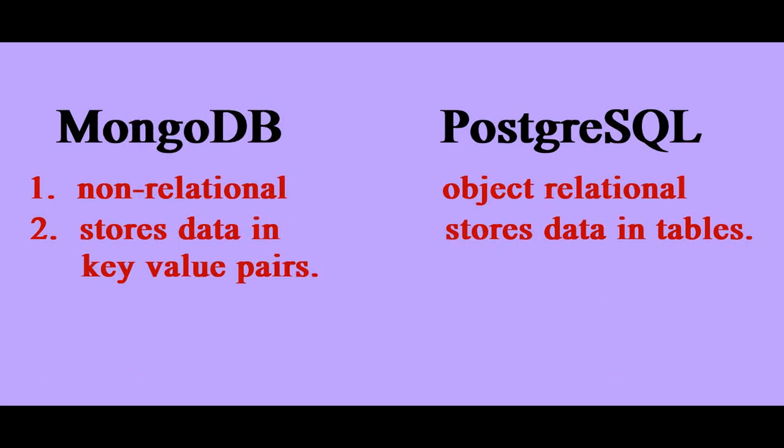When we compare MongoDB with Postgres SQL, MongoDB is a non-relational database where data is stored in key-value pairs, whereas Postgres SQL data is stored in different tables.